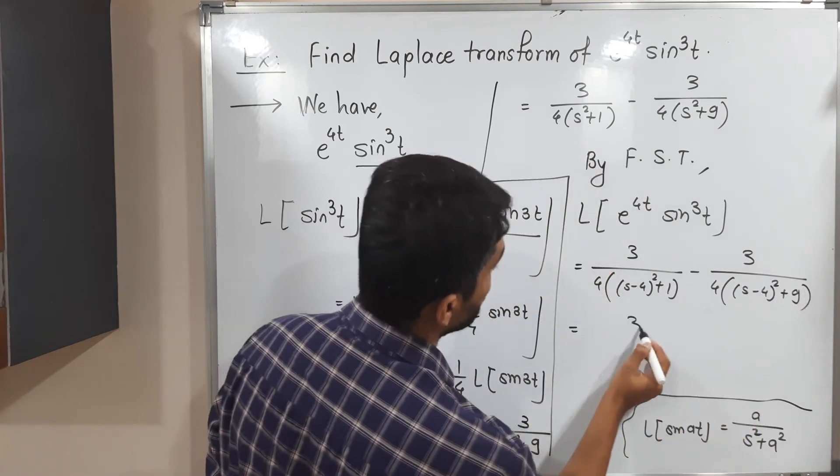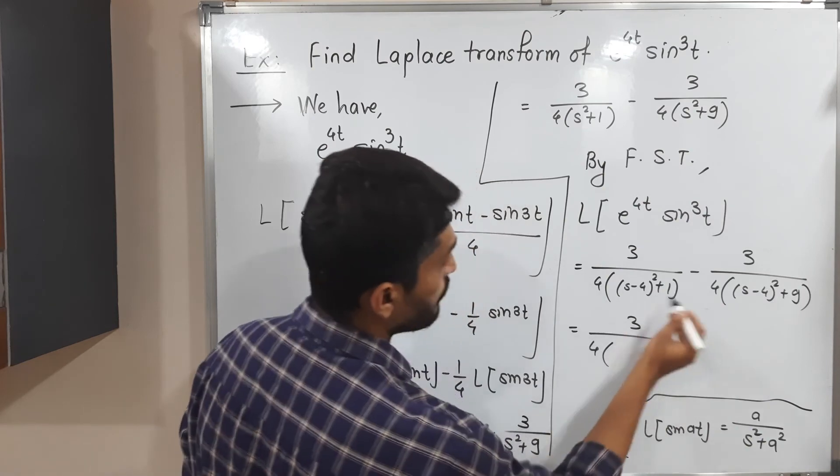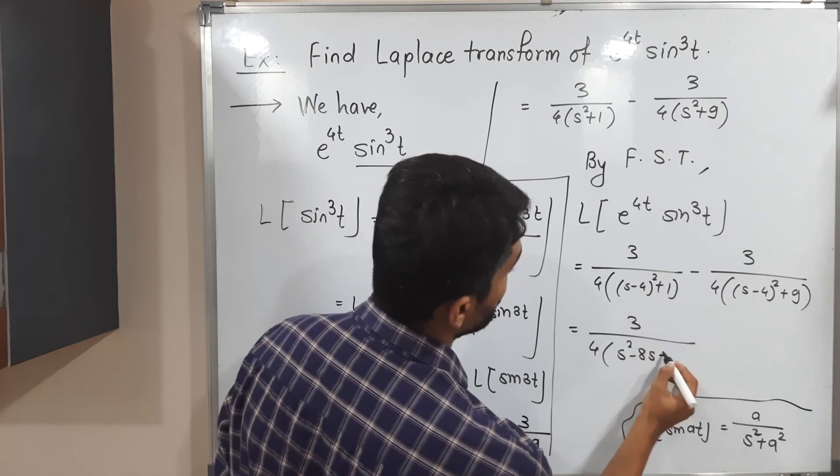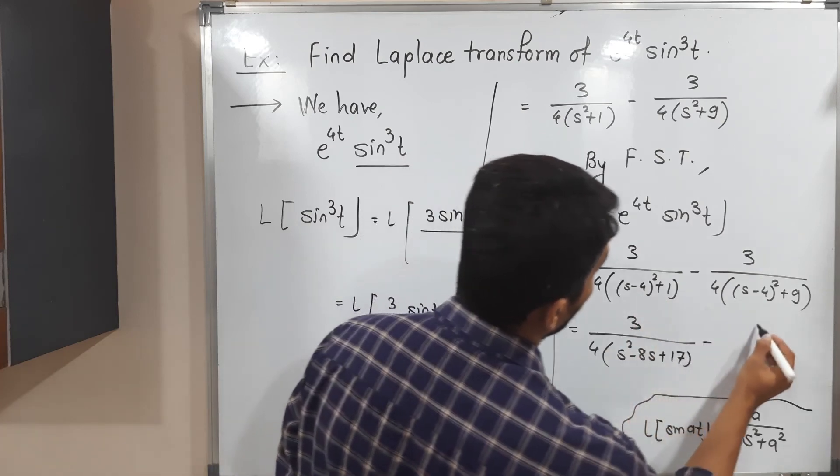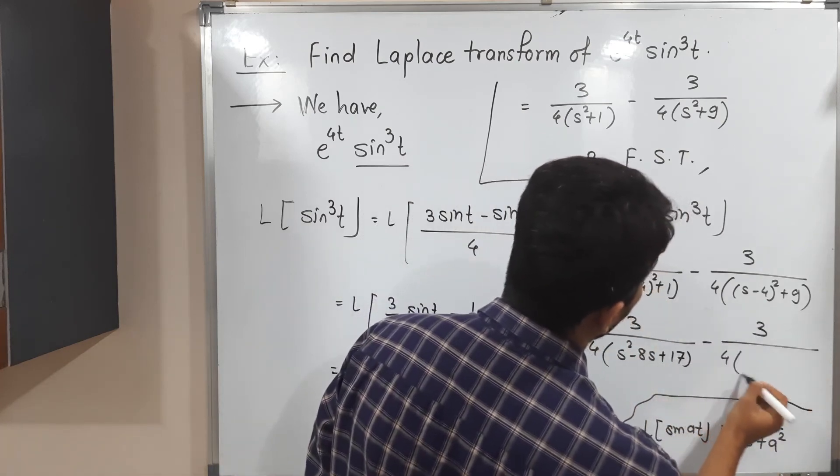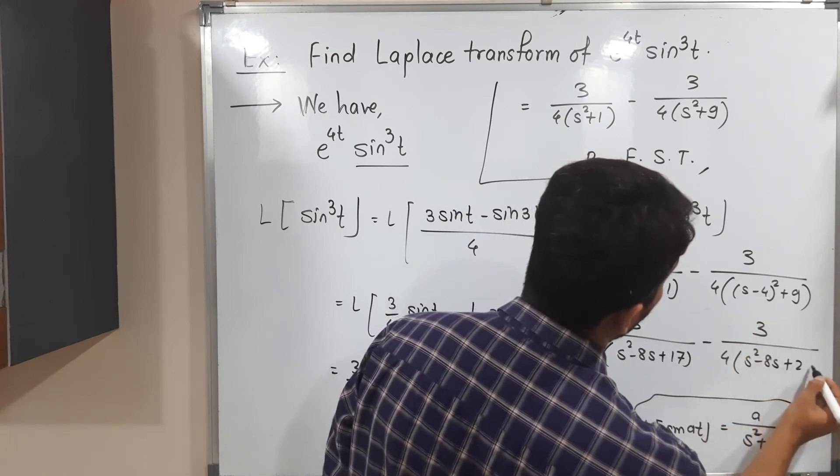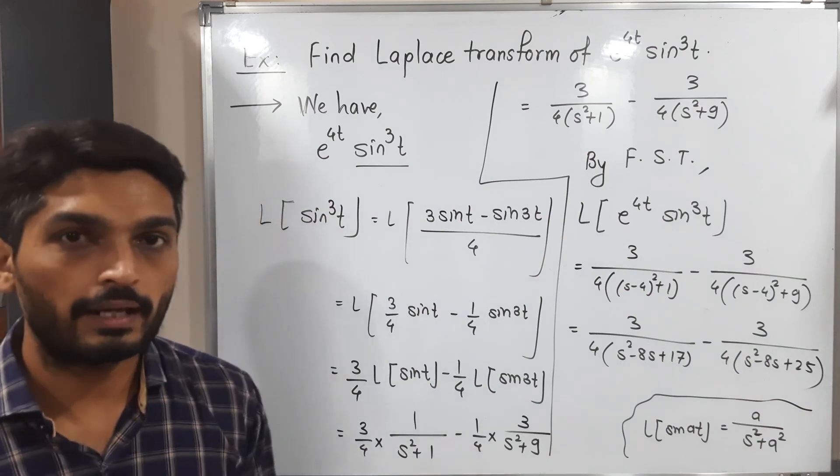So it will be like this 3 upon 4. If you want, you can expand the bracket s^2 minus 8s plus 16 plus 1, 17, minus 3/4[s^2 minus 8s, 16 plus 9, 25]. So this is required answer.